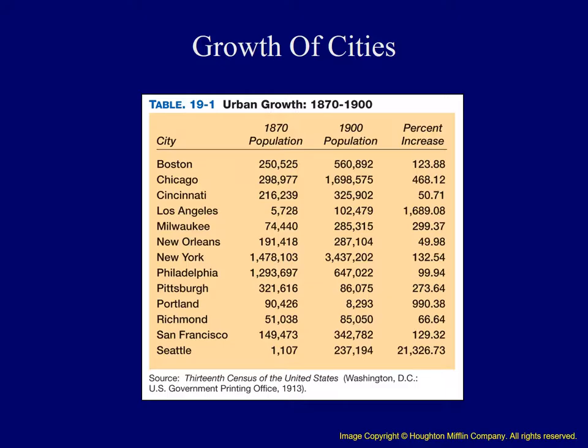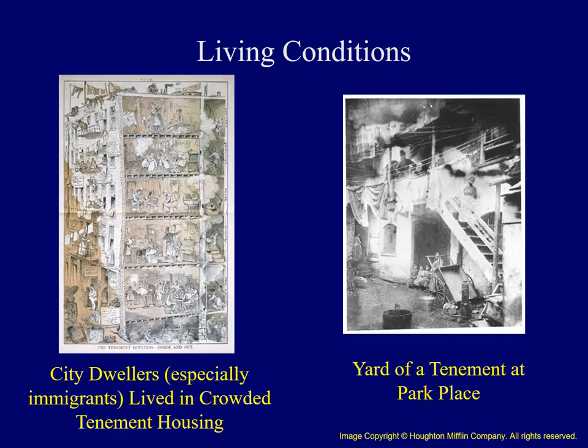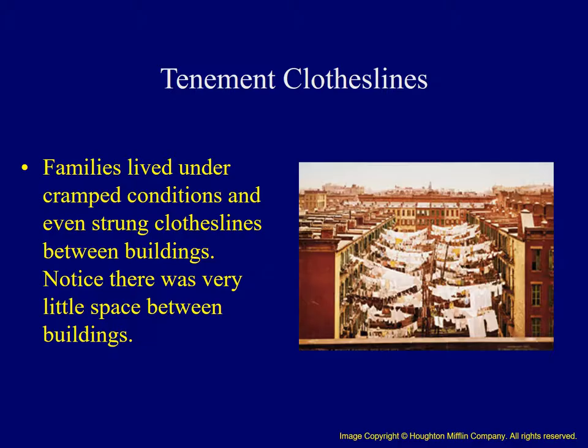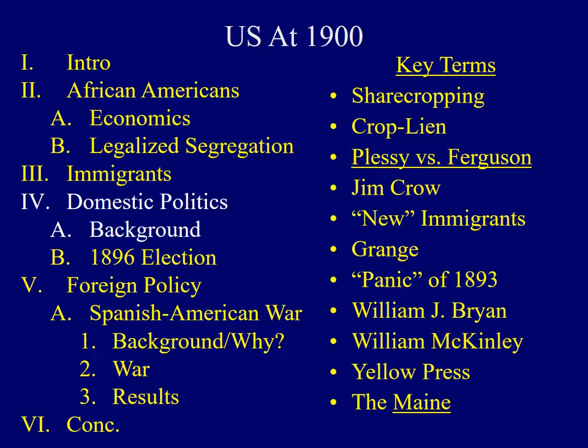As large numbers of immigrants entered the United States, we also see tremendous urban growth in the years after the Civil War. The growth of Chicago from just under 300,000 to almost 1.7 million, and New York from just under 1.5 million to about 3.5 million by 1900 are particularly notable. Living conditions in these growing cities were very far from ideal. On the left, we see how city dwellers lived in tenement houses, which were often overcrowded and unsanitary. On the right, an actual photograph of a tenement home shows families living under very cramped conditions, even stringing clotheslines between buildings to complete their laundry.